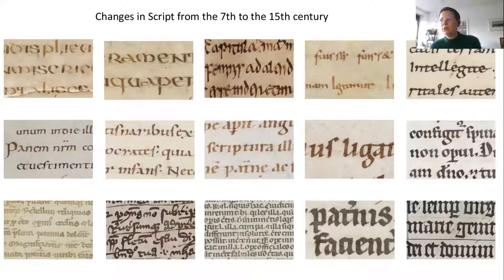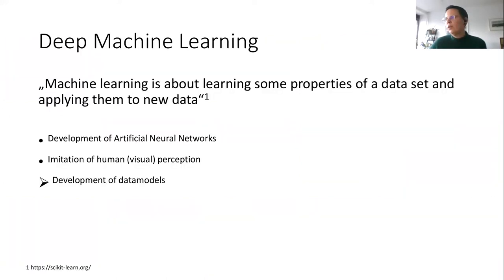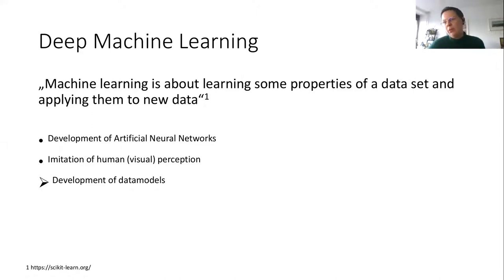We want to use deep machine learning — learning properties of a dataset and applying them to new data — to help date and localize medieval manuscripts. This means we use the information we have about script samples, such as when and where they were written, to teach a computer to search for image samples that share similar features. The goal is a finding aid for dating and localizing medieval manuscripts.